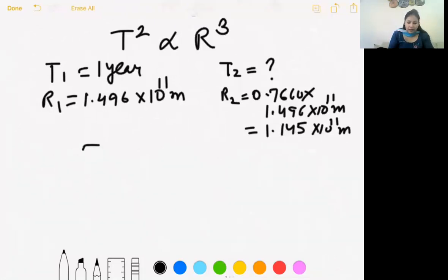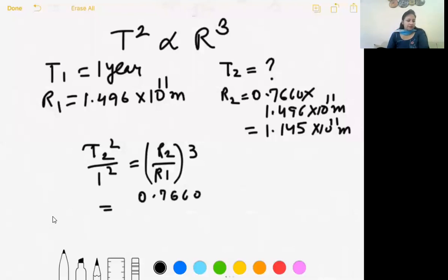T2 aapko find karna hai and R2 is 0.7660 into 1.496 into 10 rest per 11 meter. Already 1.145 something into 10 rest per 11 meter. Gurjodh check kar lena calculation. I think aapne 1.13 kuch likha hua hai.